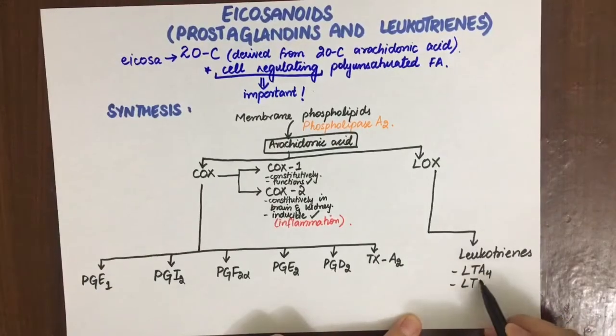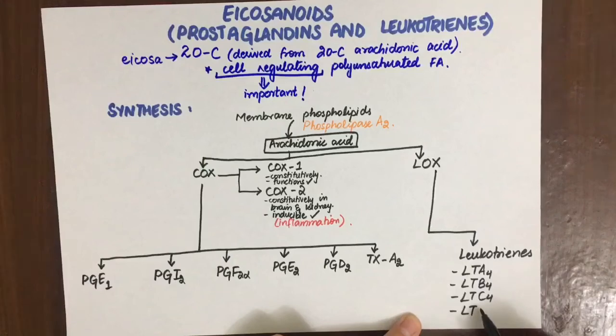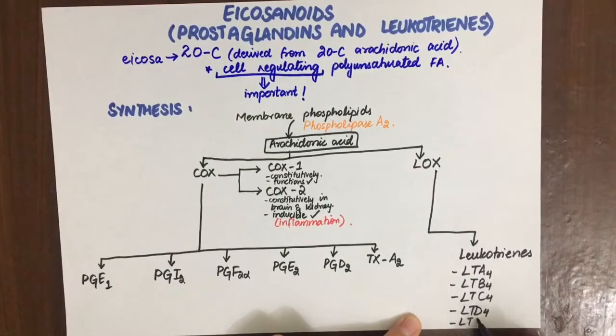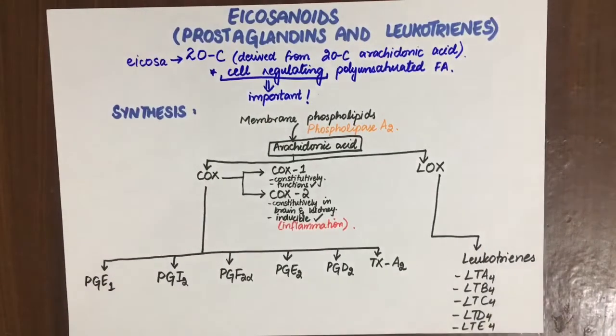On the lipoxygenase pathway, we get leukotrienes. There are many of them like LTA4, LTB4, LTC4, LTD4, and LTE4. We are not going to talk about each in detail because they are involved in the same functions: inflammation, chemotaxis, neutrophil activation, adhesion and aggregation, and release of lysosomal enzymes.